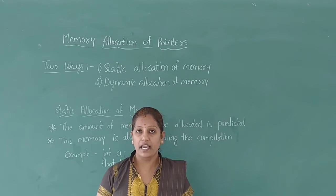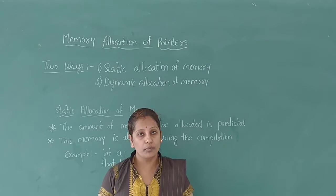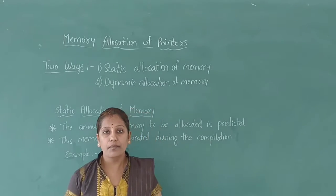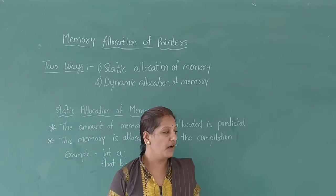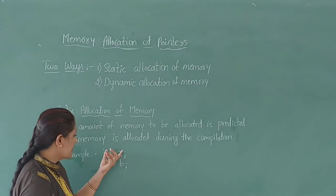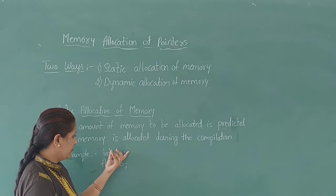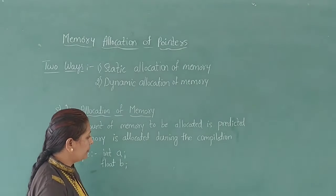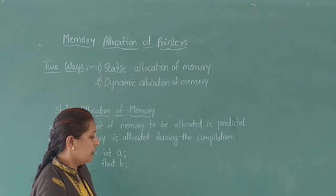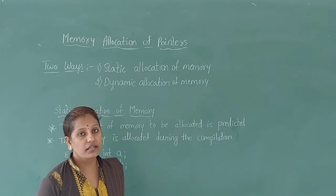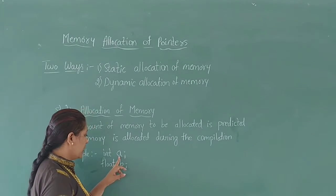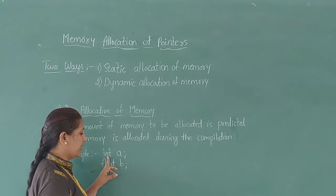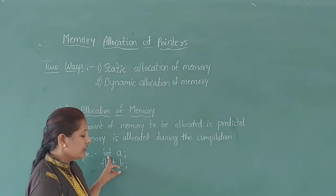All the variables declared normally are allocated memory statically. For example, int A — it allocates two bytes of memory space during the compilation time because A is a variable declared with the data type integer.